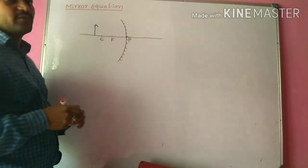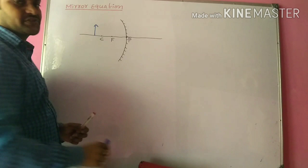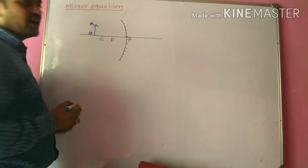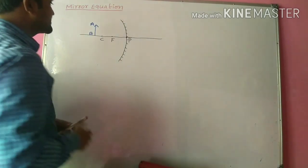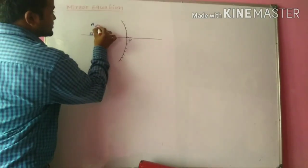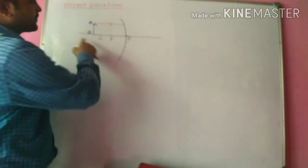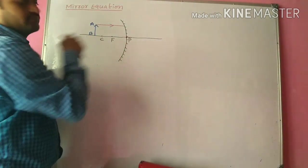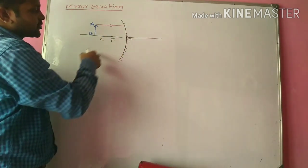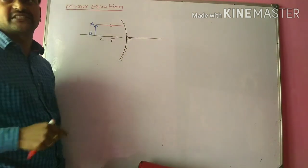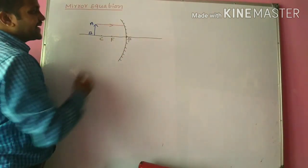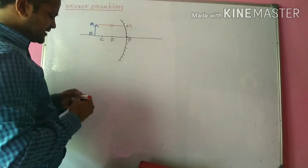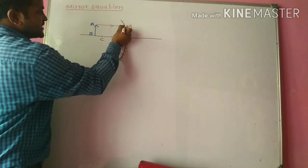To obtain the image of this object we need two light rays. Let AB be the object. Consider a light ray parallel to the principal axis. Whenever a light ray is parallel to the principal axis, after reflection it passes through the principal focus. This light ray is incident on the concave mirror at point M and after reflection passes through the principal focus.